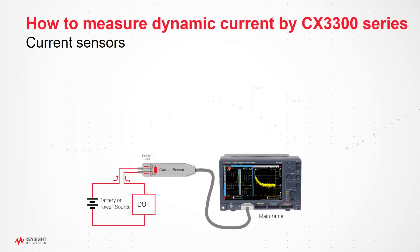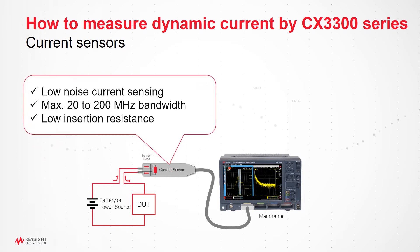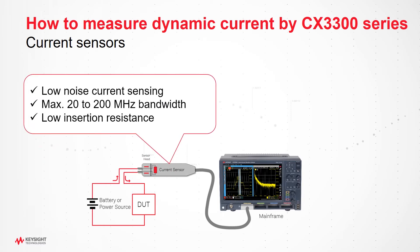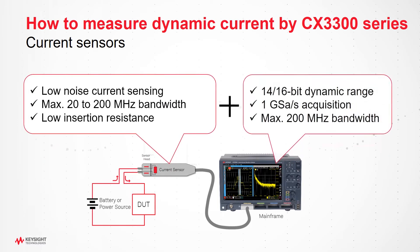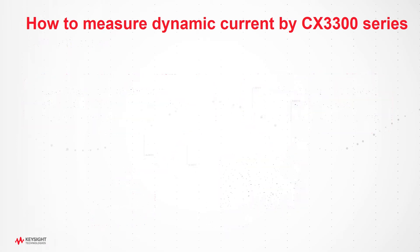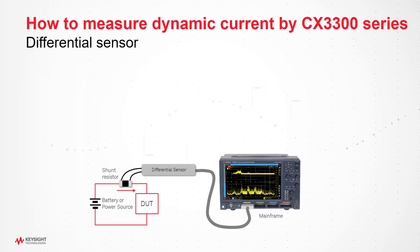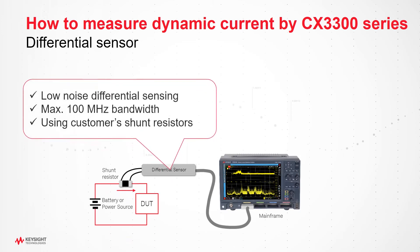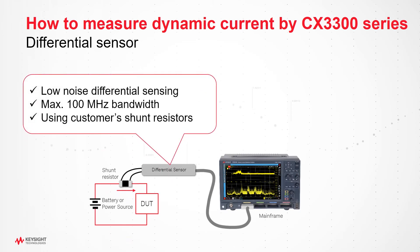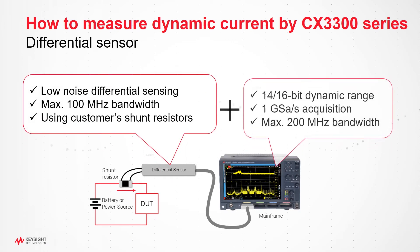The current sensors measure dynamic current directly, and the measurements are captured and shown on the mainframe. The differential sensor measures the voltage across your shunt resistors on the board, and the captured waveform is shown on the mainframe.